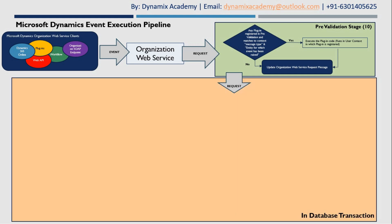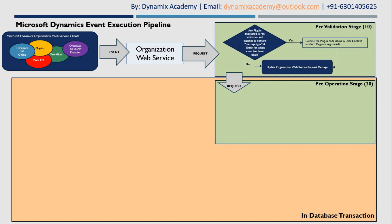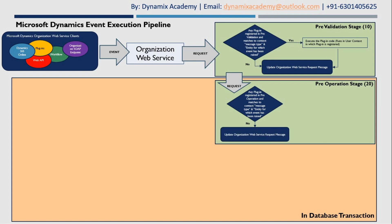Once the pre-validation stage is completed, the database transaction starts on the Dynamics 365 server. The first stage within the database transaction is the pre-operation stage. The pre-operation stage receives the updated web service request message and again checks whether there are any plugins registered on pre-operation stage that match the message type and entity. If no such plugins are found, it updates the request message and passes it to the next stage.